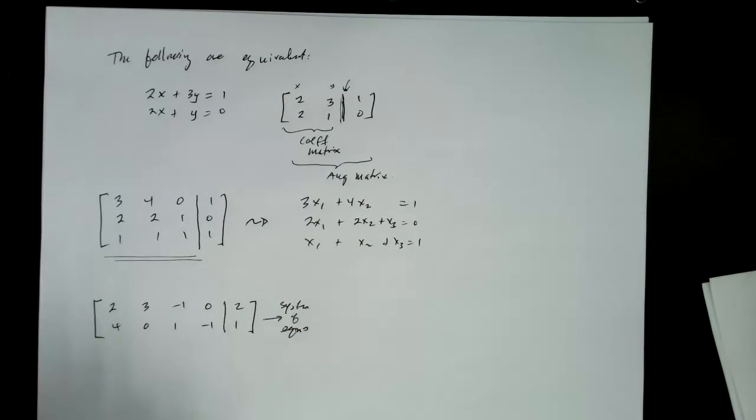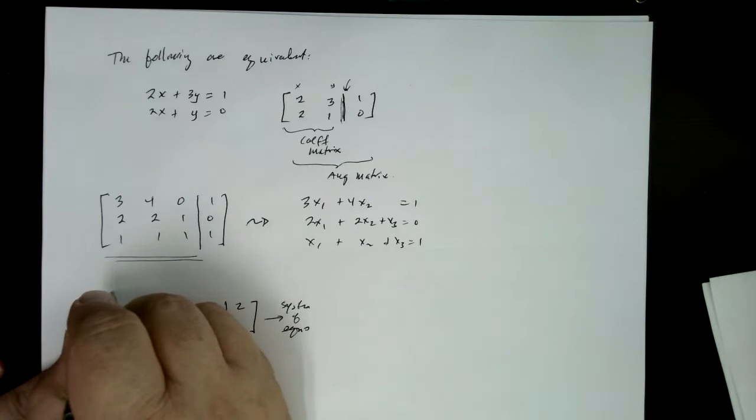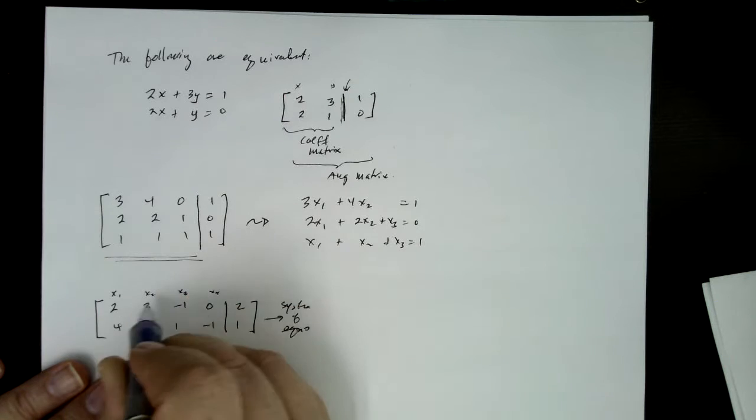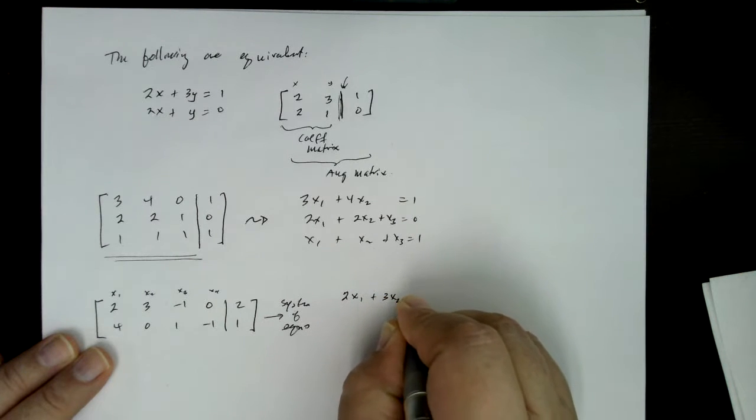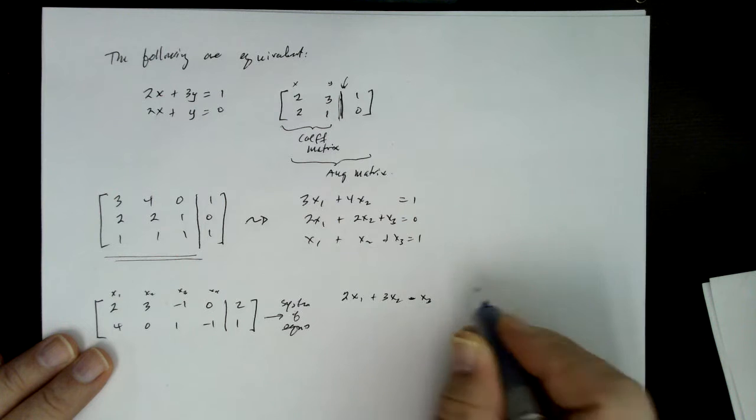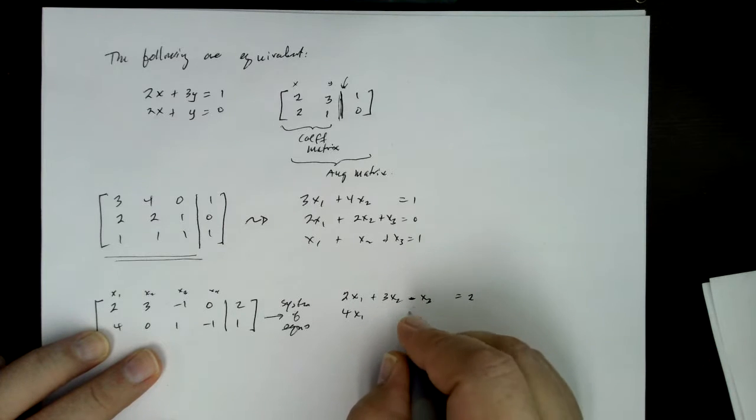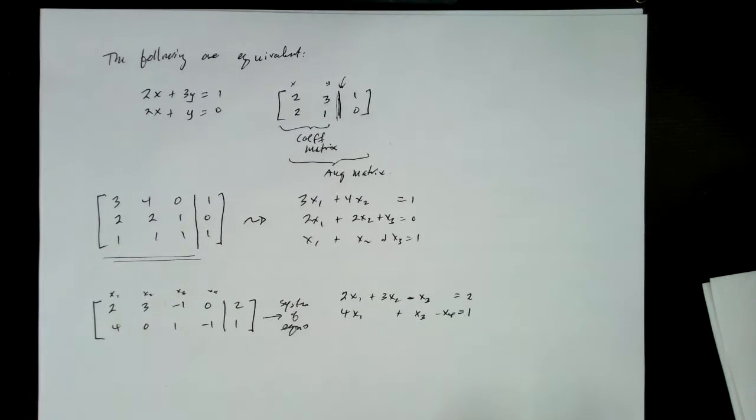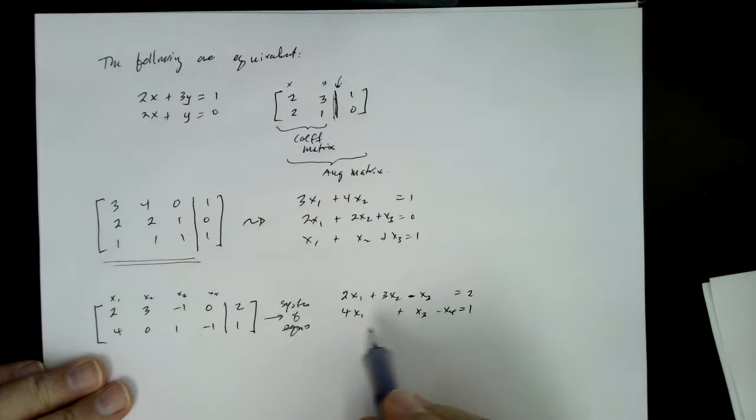So you might pause the video for a moment and see if you can write down the corresponding system. Okay, so this is where it's easier to use like xi instead of xyz and w and stuff. So here I would say x1, x2, x3, x4 for my four variables, and so then the system of equations I'm looking at would be 2x1 plus 3x2 minus x3, and then no x4 equals 2, and then 4x1, I'd skip x2, and then x3 would be, plus x3 minus x4 equals 1, although you don't have to keep space there for the missing variables. Good, so these correspond to each other.